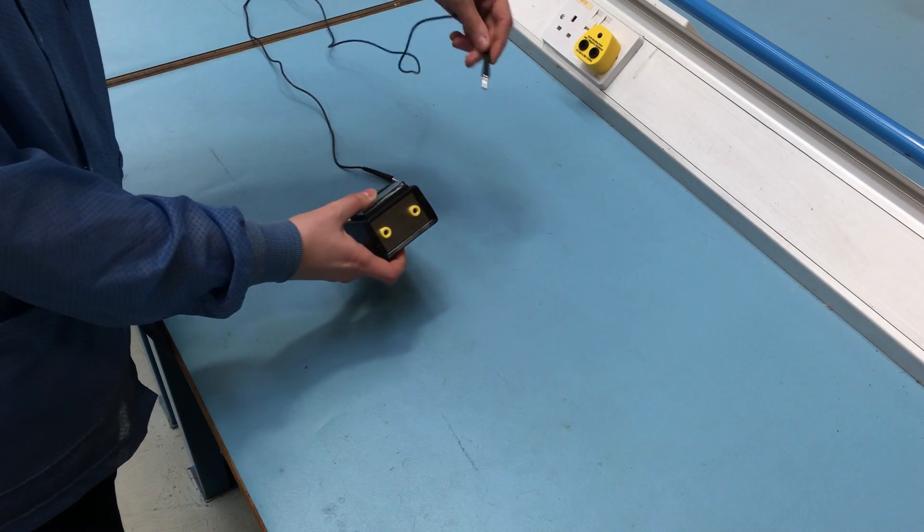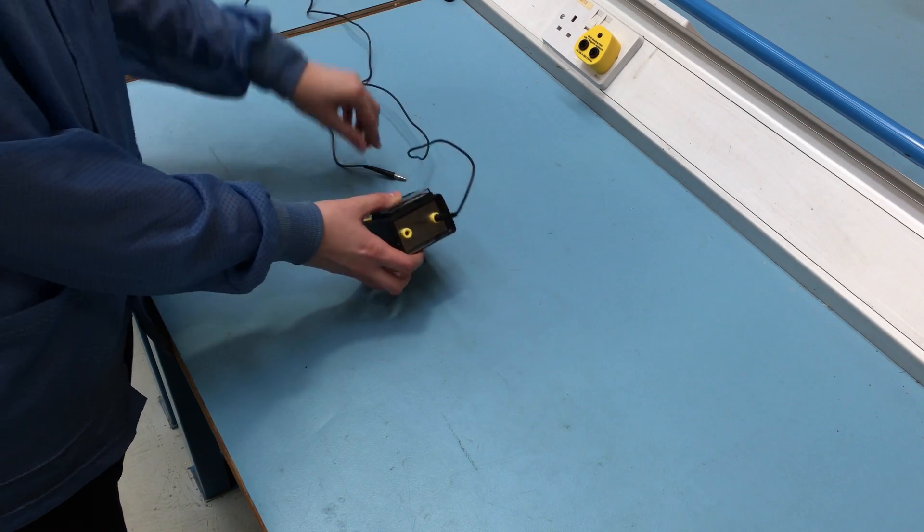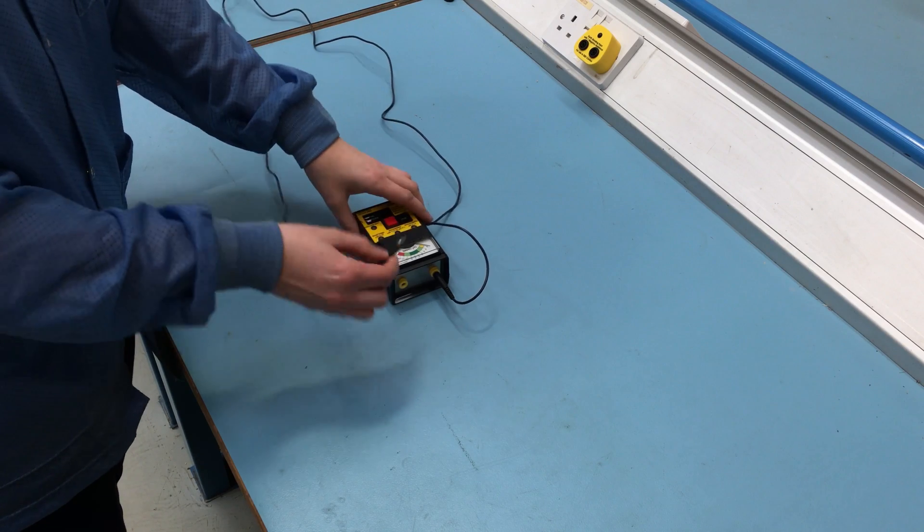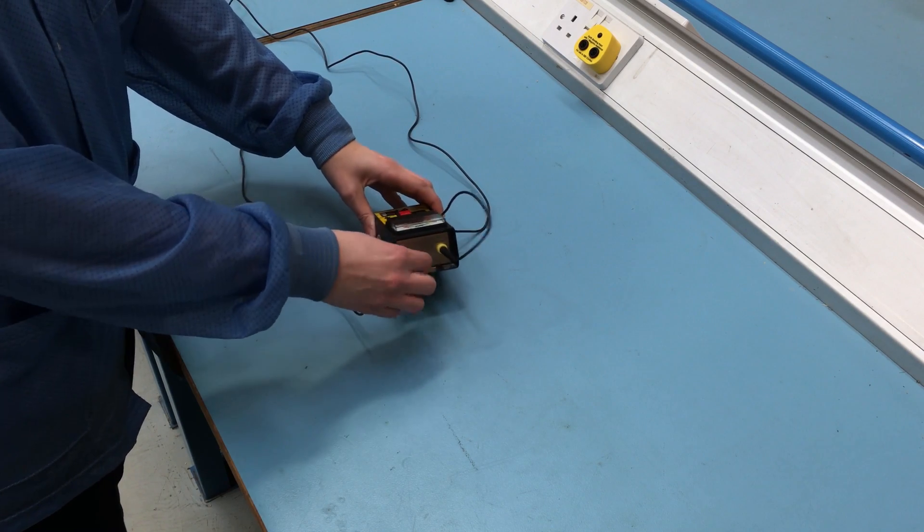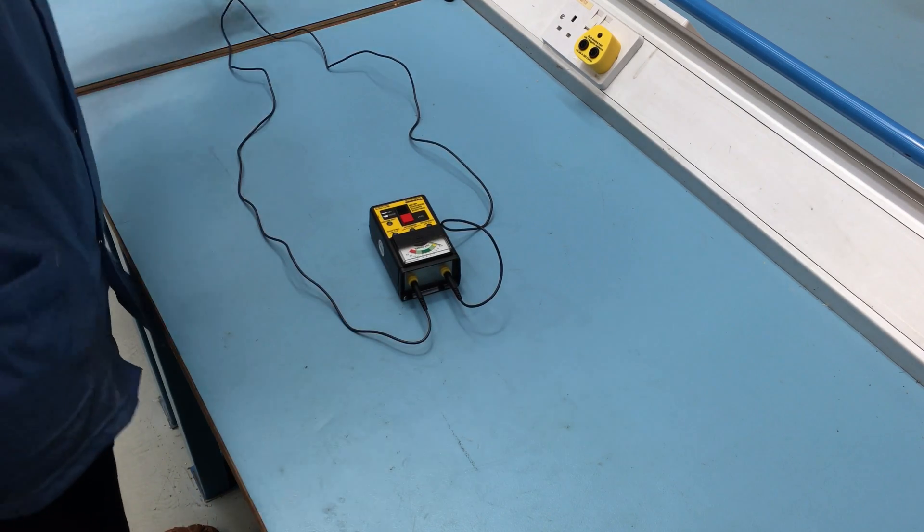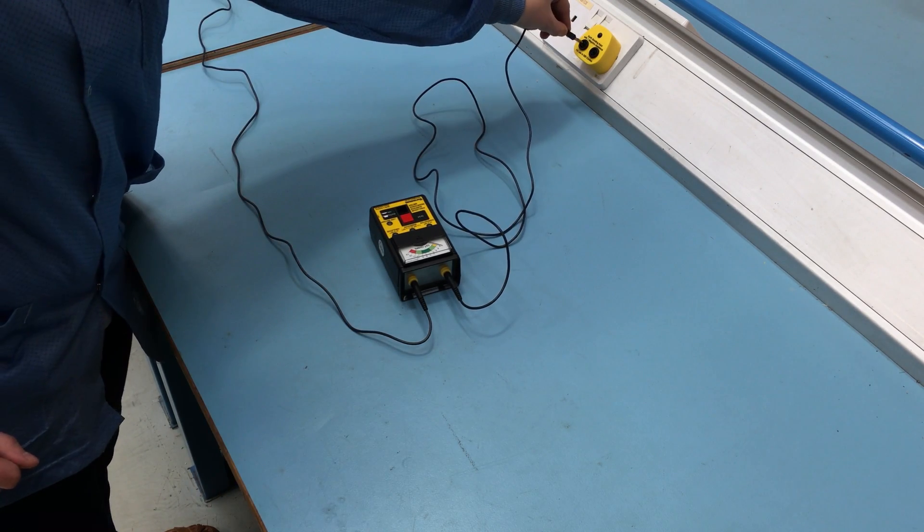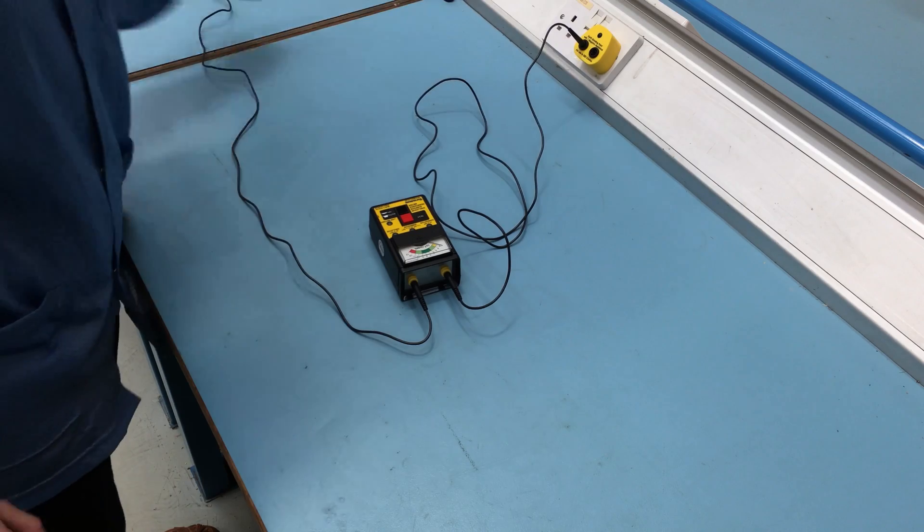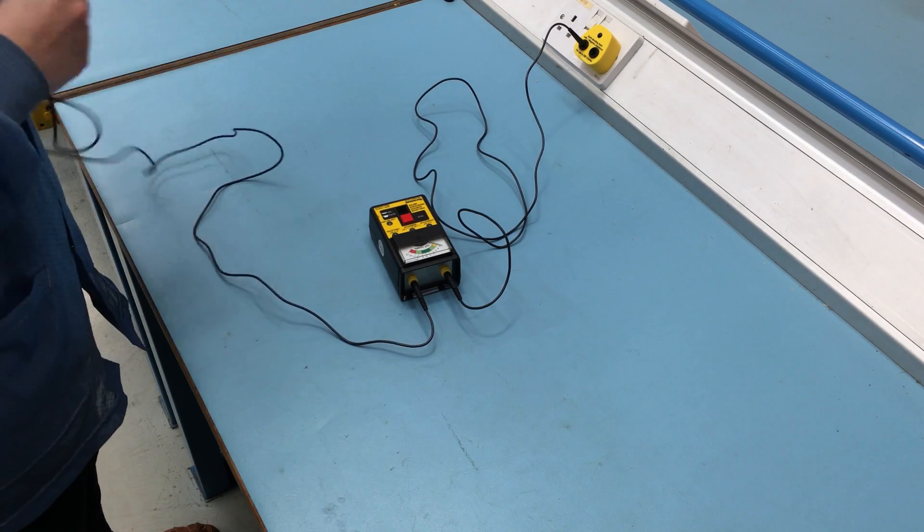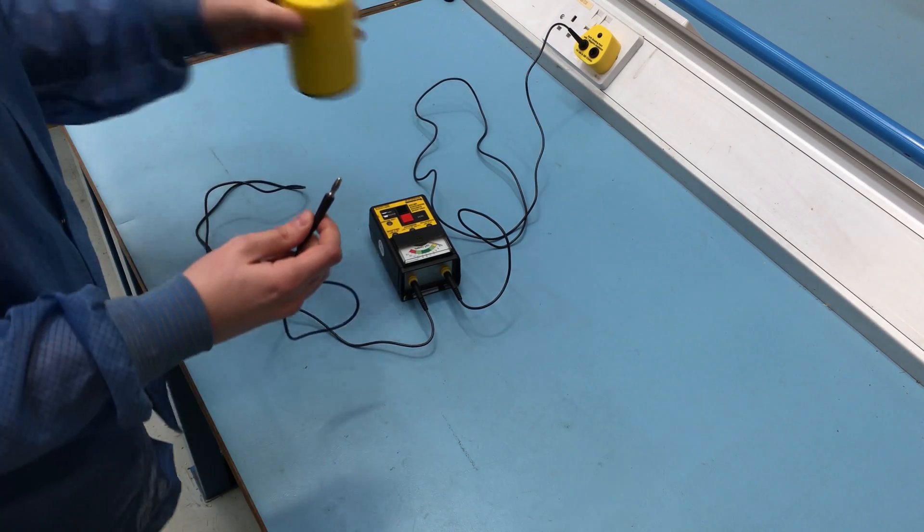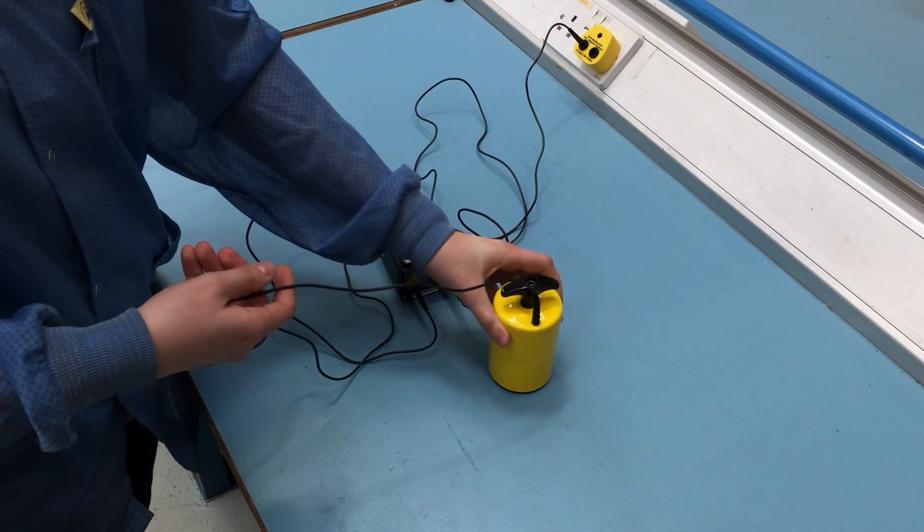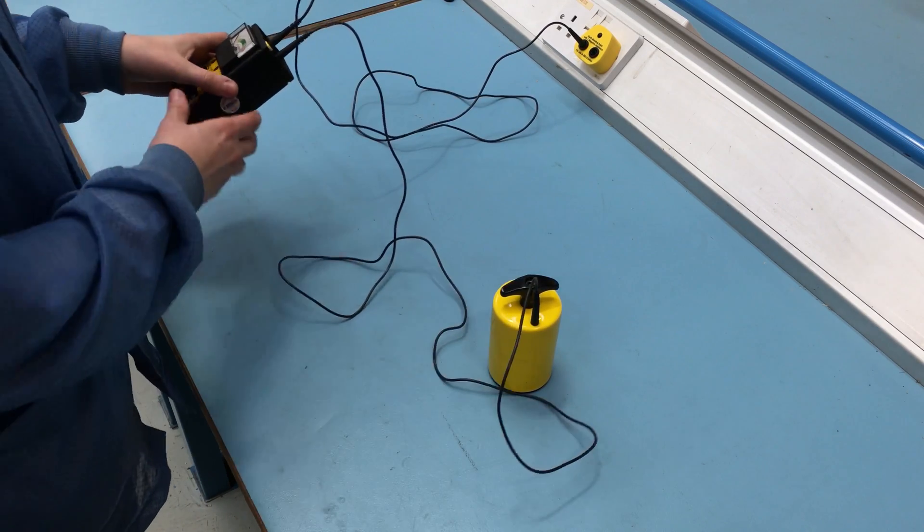In order to measure the resistance to ground, connect both shielded test leads to the test jacks on the meter. Attach one test lead to the protective earth ground and the other lead to one of the 2.27kg electrodes. Then place the electrode on the centre of the working surface.